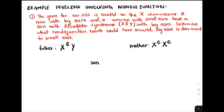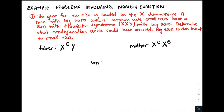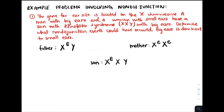We're also told that the son has Klinefelter syndrome, which is a genotype of XXY, and he has big ears, which are dominant. So we know his genotype is XXY and he must have at least one big E allele. Since he's a son, he's male, and therefore he must have received his Y chromosome from his father. We also know that the mother must have contributed an X chromosome with the little E, because that's the only allele she has.